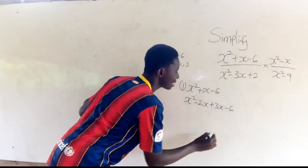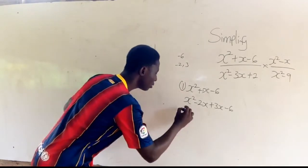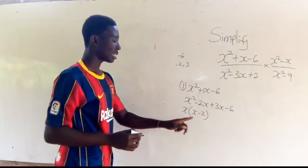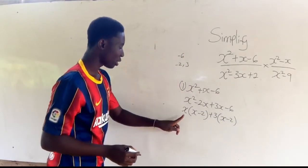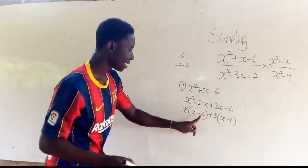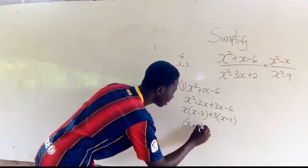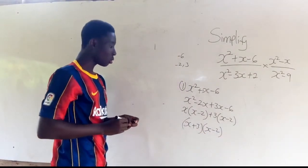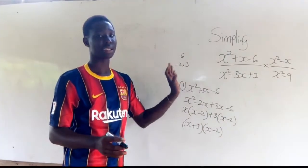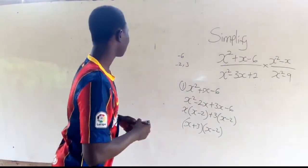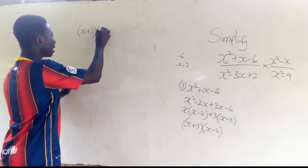Now x is common in the first two terms, so we factorize x out to get x(x minus 2). Then we factorize 3 out of the remaining terms to get plus 3(x minus 2). We then combine to get (x plus 3) into (x minus 2). Note that the expressions in the brackets must always be the same — if they differ, you've made a mistake. So the numerator factorizes to (x plus 3)(x minus 2).